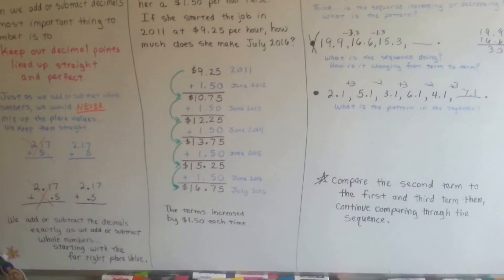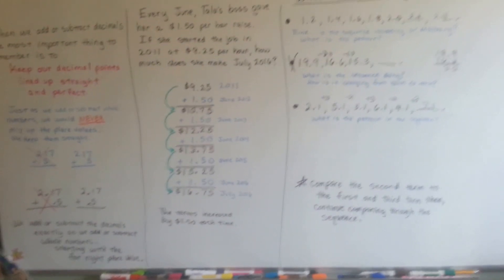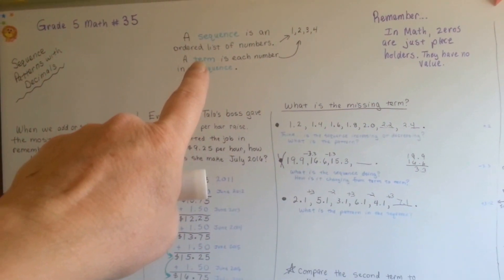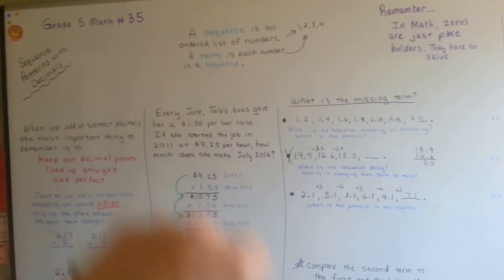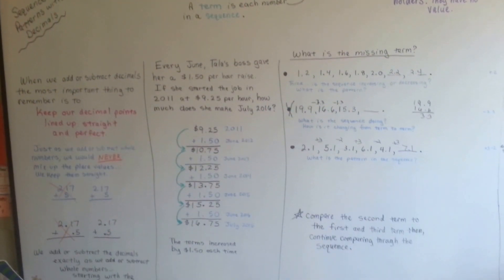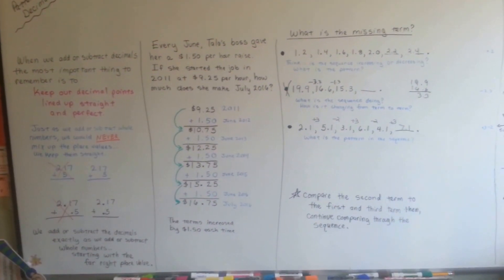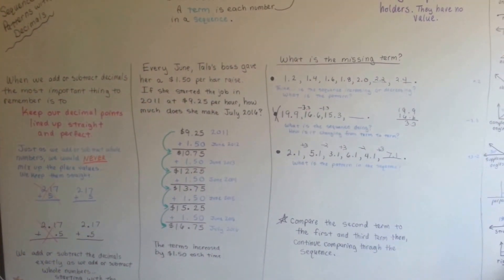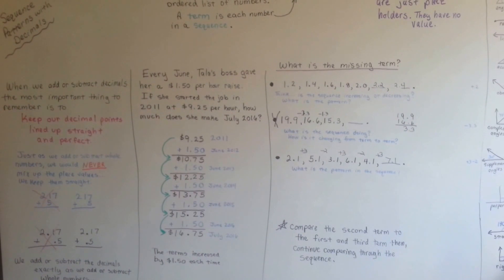So those are sequences and patterns with decimals. They're the same as sequences and patterns with whole numbers. Remember what a sequence is, that it's an ordered list of numbers and that a term is each number in the sequence and that you should be able to figure it out. Keep your decimals straight. Sorry about my dog barking. I think she sees a squirrel. I'll see you next video. Bye.